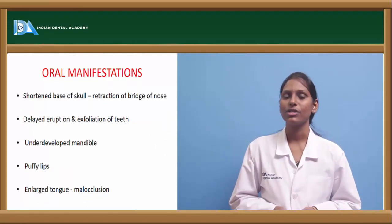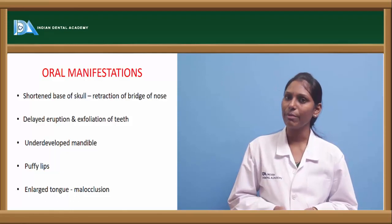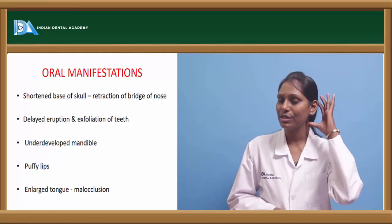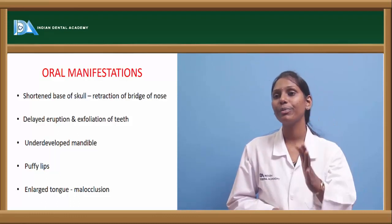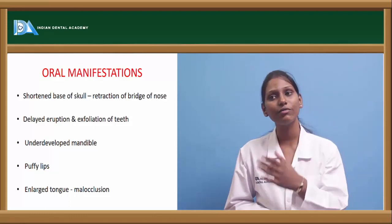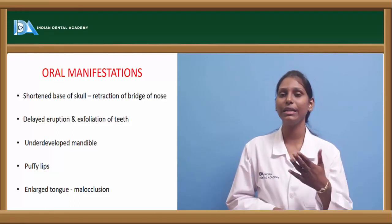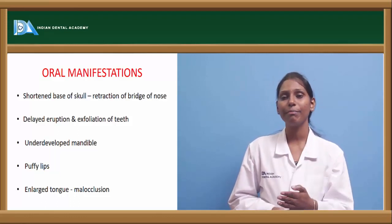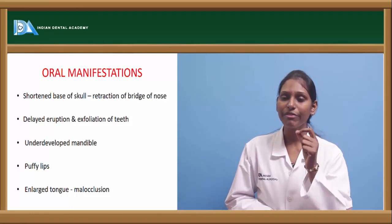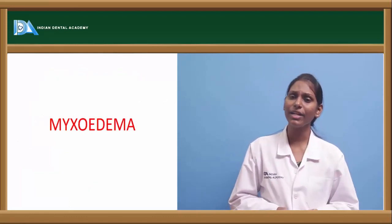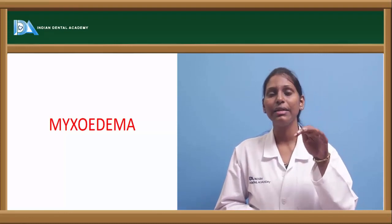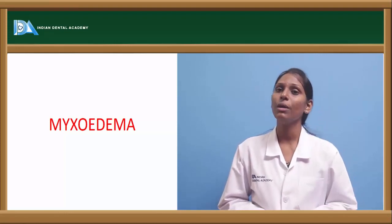Orofacial manifestations of cretinism include a shortened base of the skull, depression of the bridge of the nose, delayed eruption and exfoliation of teeth, underdeveloped mandible, puffy lips, and enlarged tongue that is usually protruded outside, leading to malocclusion.